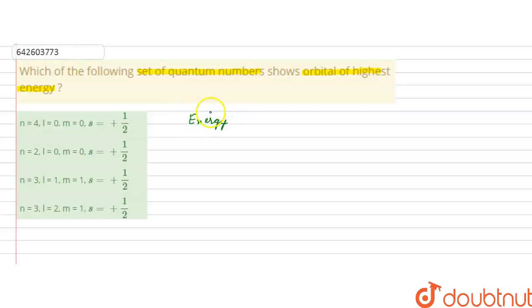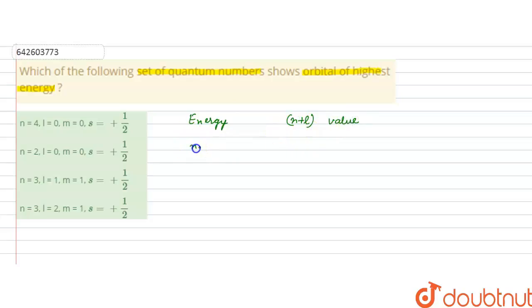The energy of an orbital is determined by the n plus l value, where n is the principal quantum number and l is the azimuthal quantum number, also called the angular momentum quantum number.